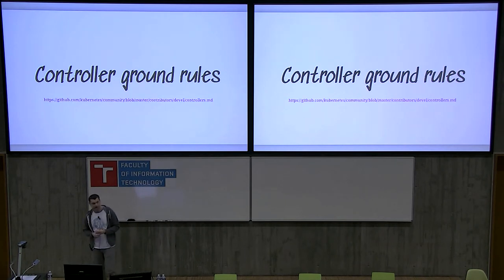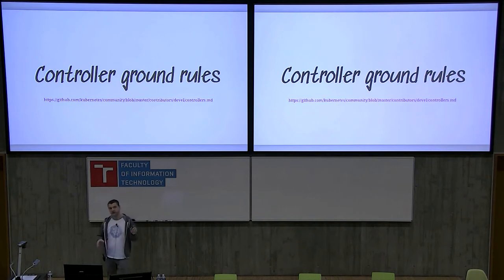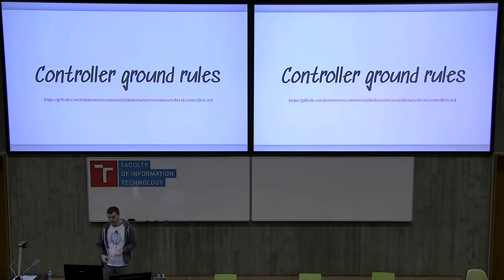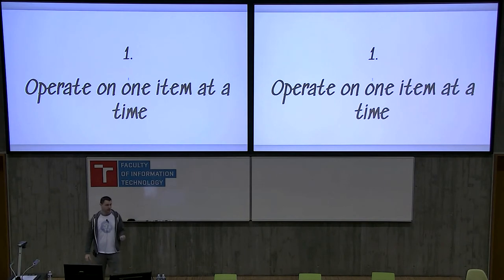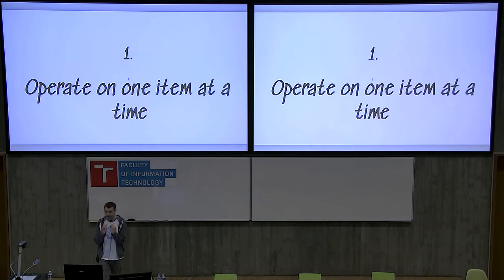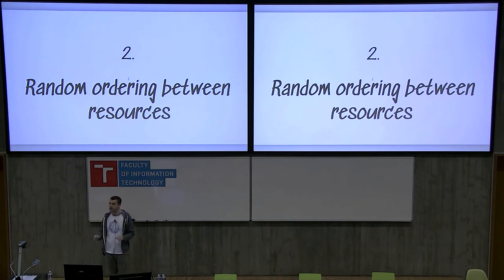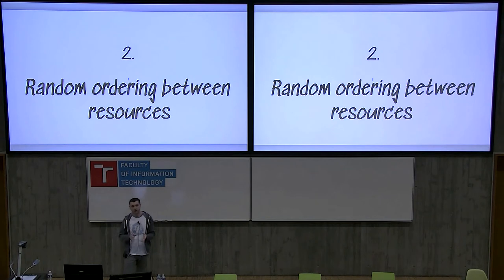Before closing, there are 11 ground rules every single controller should fulfill. All Kubernetes controllers except cron job fulfill these. Rule one: every controller operates on a single item at a time, always. Rule two: there's random ordering between items. This is a distributed system — there is no ordering, and you should not introduce any. You don't know how or when people will modify your resource; you simply need to react to changes at any point in time.